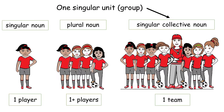To help kids understand this concept better, view this template with them. A singular noun is one player. More than one player becomes a plural noun, players. When all the players join to form a group, they become a singular collective noun known as one team.